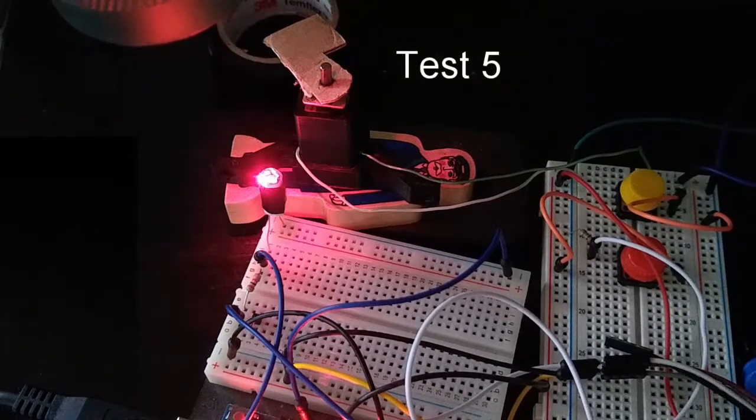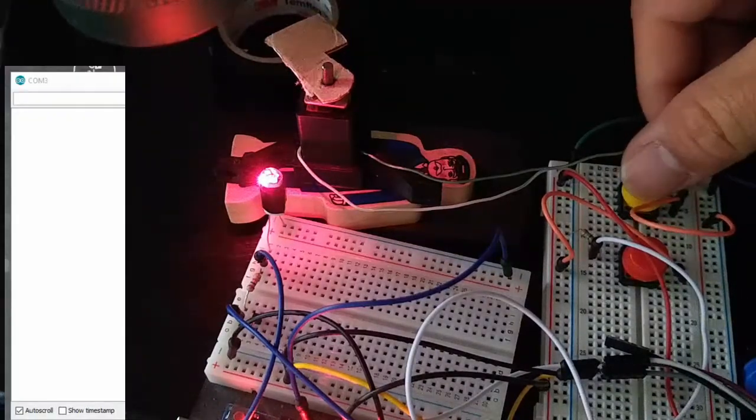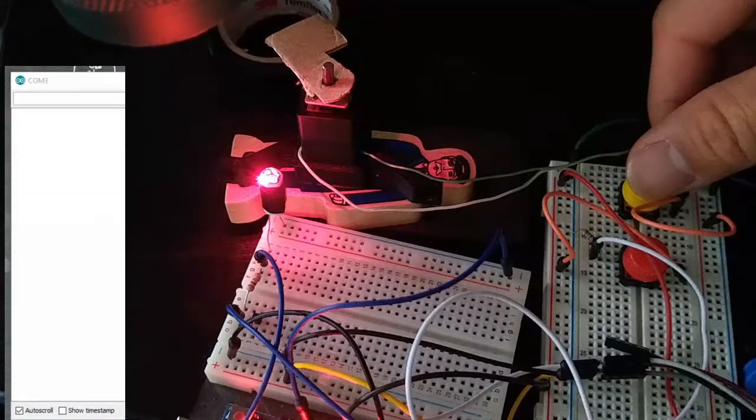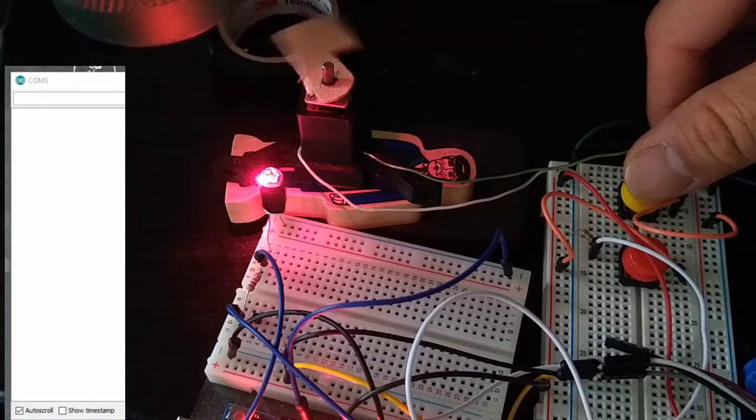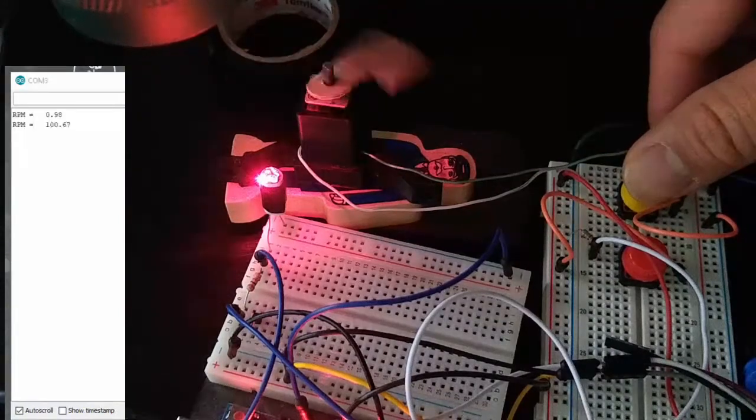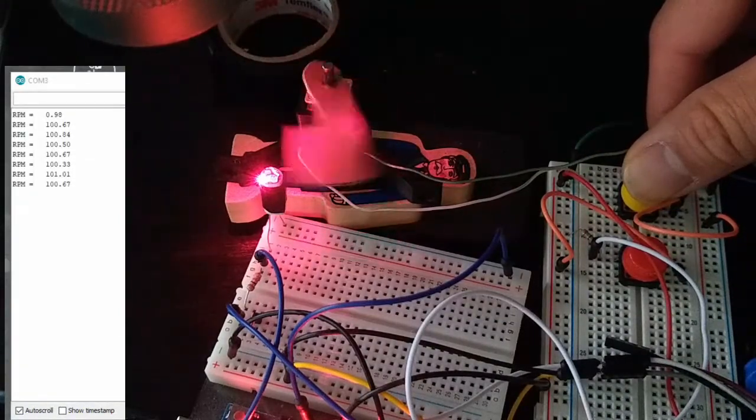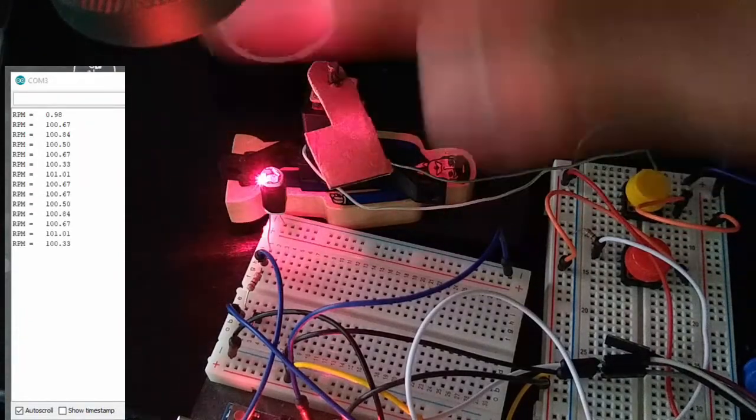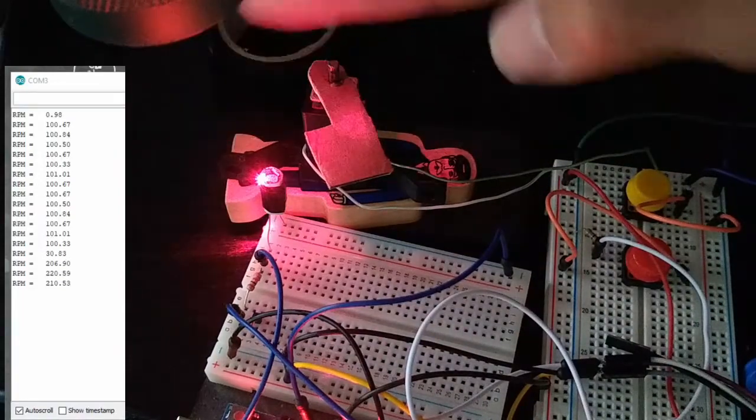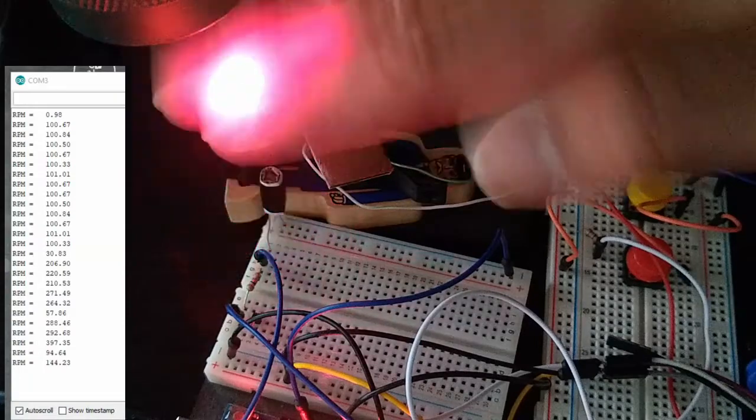Okay, this is test five. This is the RPM test. So we have our laser over here and the motor. I'm going to press this button and start the motor and we'll break the laser. We're staying at about 100 RPM. And if we do a real quick movement over here, we can see the RPM is quicker. We're moving our hand at a quicker rate.